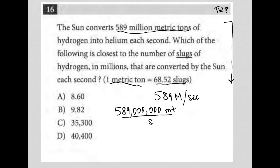Then I'm going to multiply that by the conversion factor that was provided in the question. This conversion factor tells me that one metric ton or one MT goes in the denominator so that I can cross-cancel those units out. That's why I put it down there. It's equal to 68.52 slugs. The units I'm left with are slugs and seconds, which is exactly what I want.